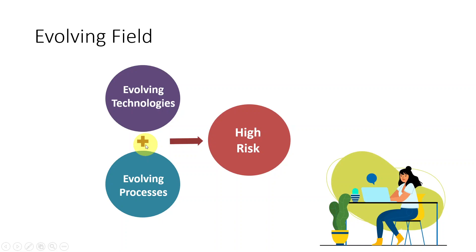Finally, the software development field is an evolving field. We are working with evolving technologies and evolving software development processes. Commercial software development started somewhere around the 1970s, meaning we have only about 50 years of industry history. When working with evolving technologies and evolving processes, there is always high risk.